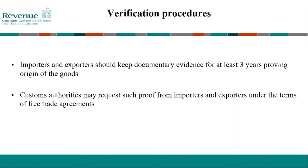In terms of verification procedures, importers and exporters should keep documentary evidence for at least three years proving the origin of goods, and customs authorities may request such proofs under the terms of the free trade agreement. Examples of documentary evidence include direct evidence of a process carried out by the exporter or supplier in their accounts or bookkeeping records, documents proving the origin of materials used in production, or documents proving the working or processing of the materials. It's important to remember that you need to keep records and evidence for three years.